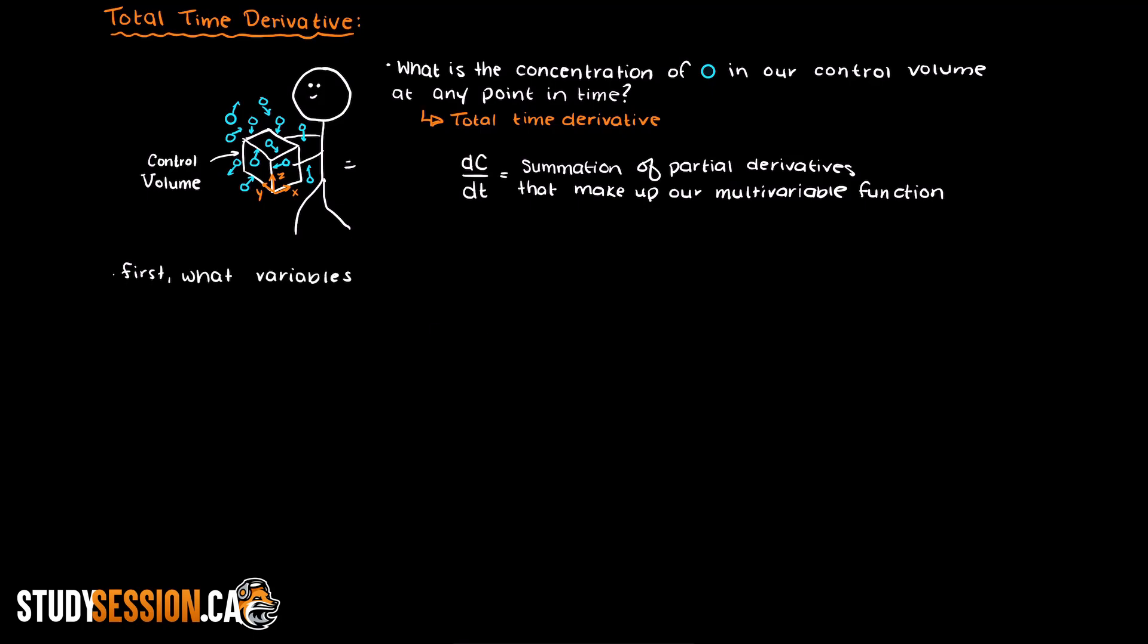So firstly, what variables are affecting our multivariable function? Well obviously time is going to affect our number of spheres within our cube at any given time as they are just floating out in the room in every which direction. What else do you think is going to affect our concentration?